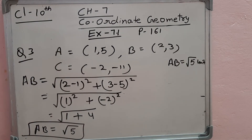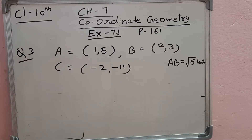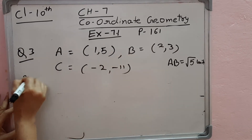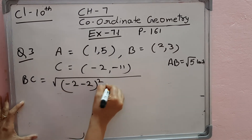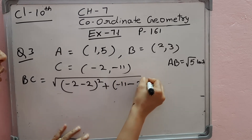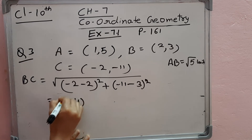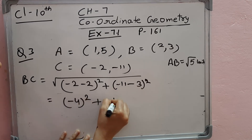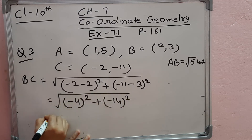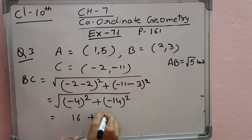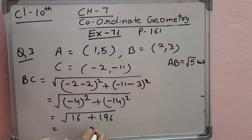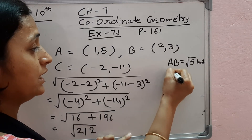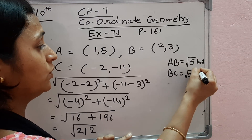Now BC. I need to find BC, so by distance formula again, using points B(2,3) and C(-2,-11): BC is equal to square root of (-2 minus 2) whole square plus (-11 minus 3) whole square. (-2 minus 2) is -4 whole square, plus (-11 minus 3) is -14 whole square. Minus 4 whole square is 16, minus 14 whole square is 196. So 16 plus 196 is 212. BC is equal to under root of 212 units.